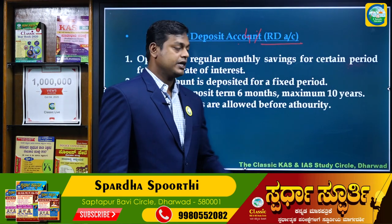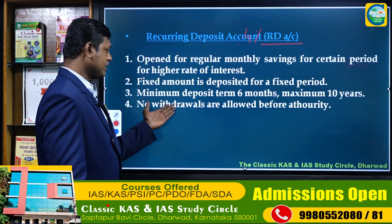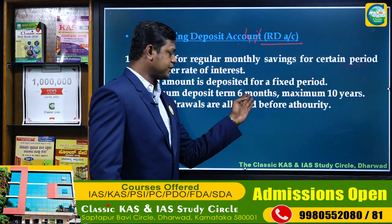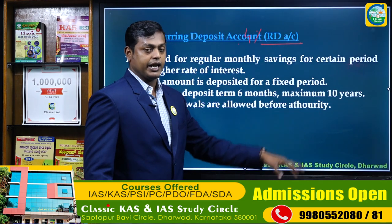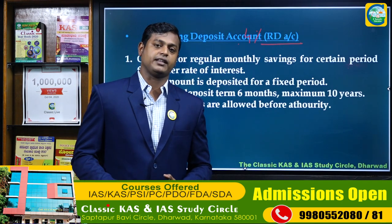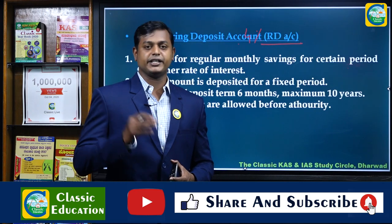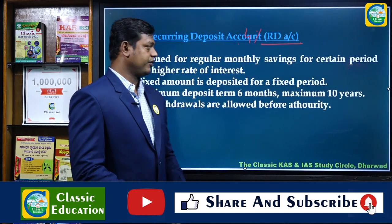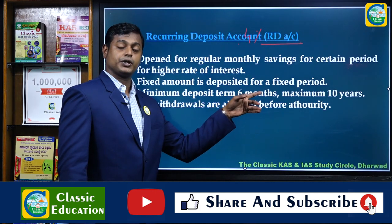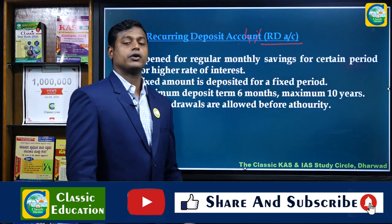Point number four: no withdrawals are allowed before maturity. Within the minimum six months, no withdrawals are allowed. However, if you choose one year or two years and in between you want to close the account, yes, you can do it — but the amount calculation will be based only on the RD interest up to the point of closure. The minimum term required is six months; maximum is 10 years.